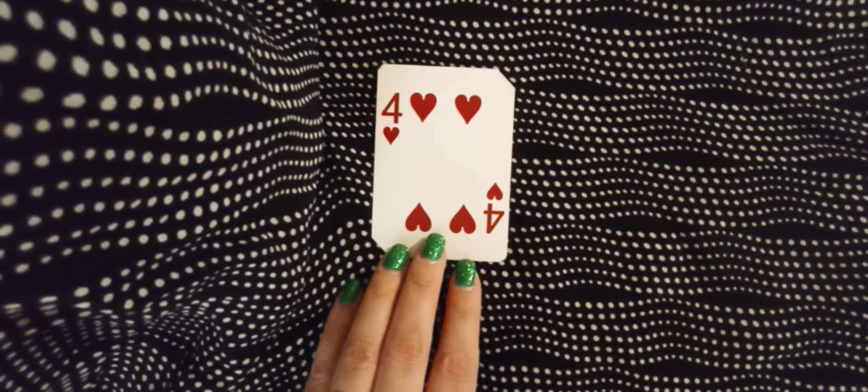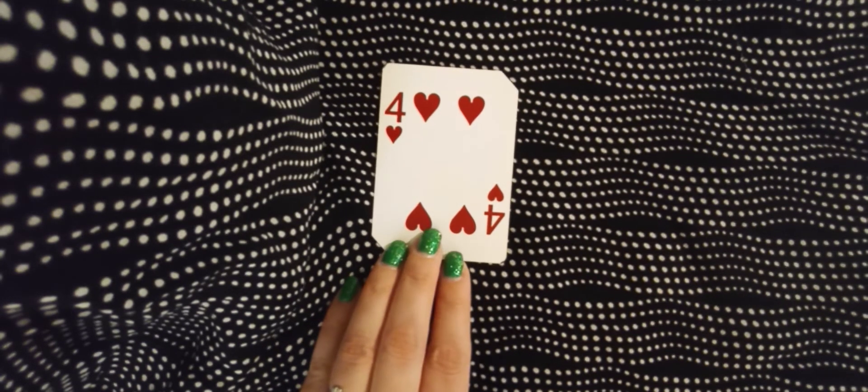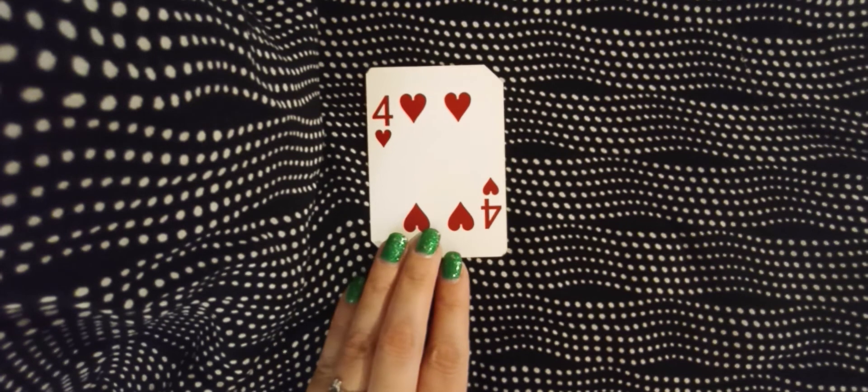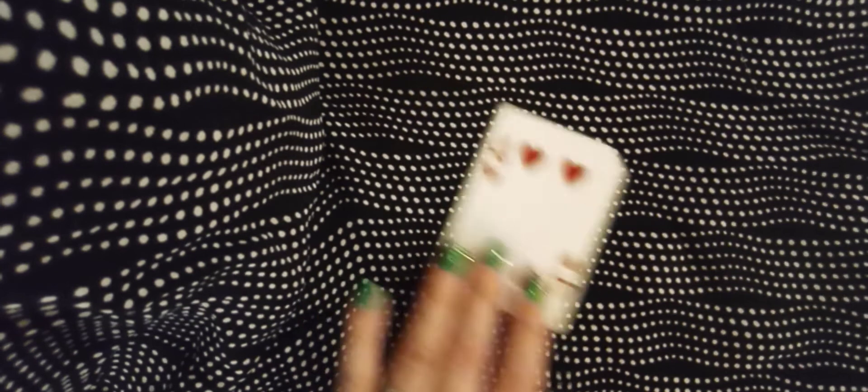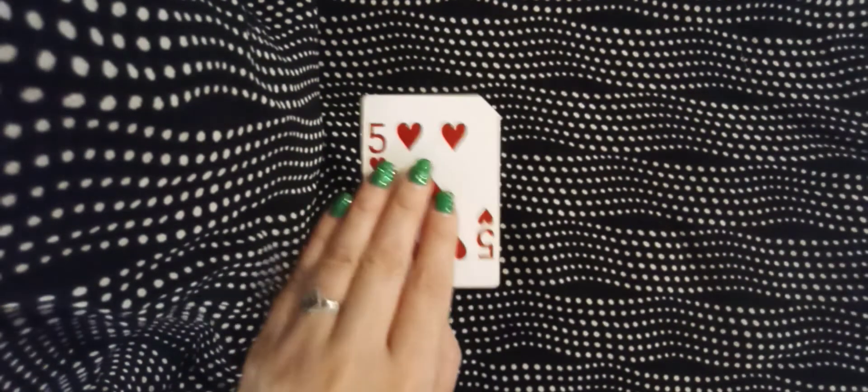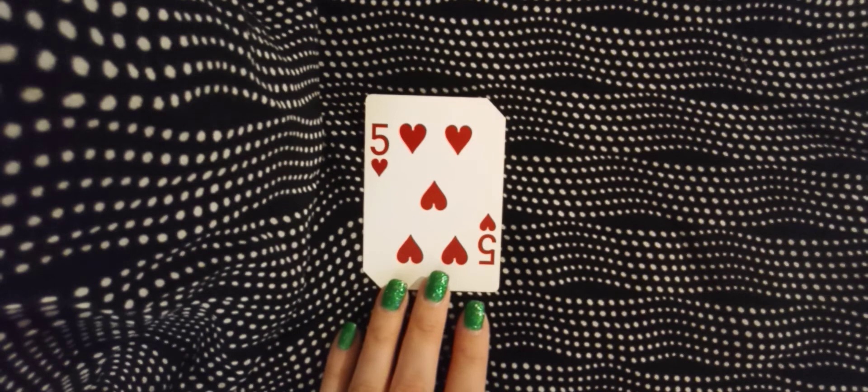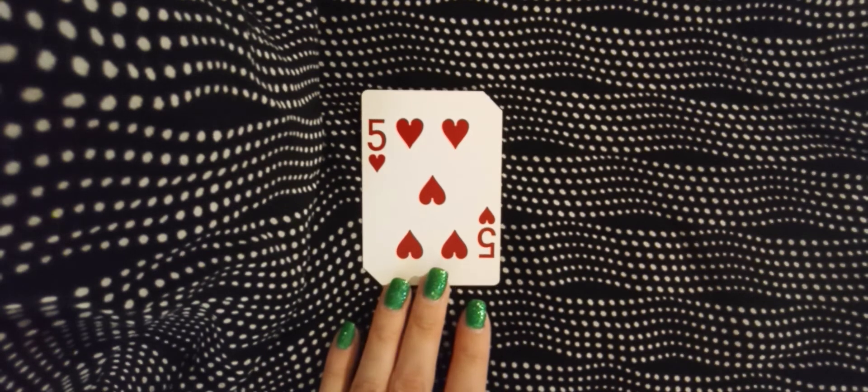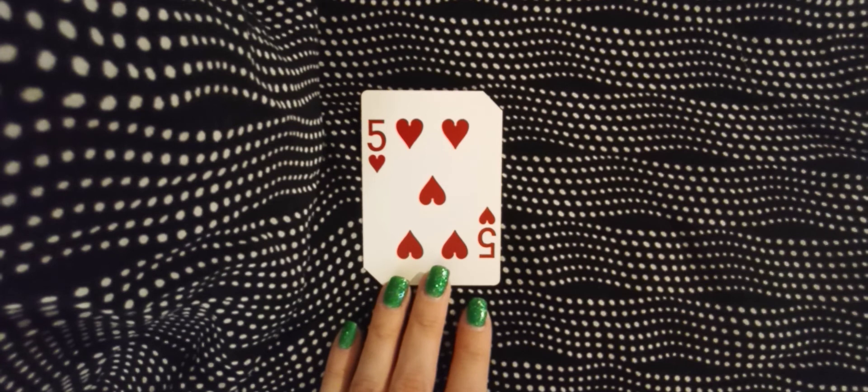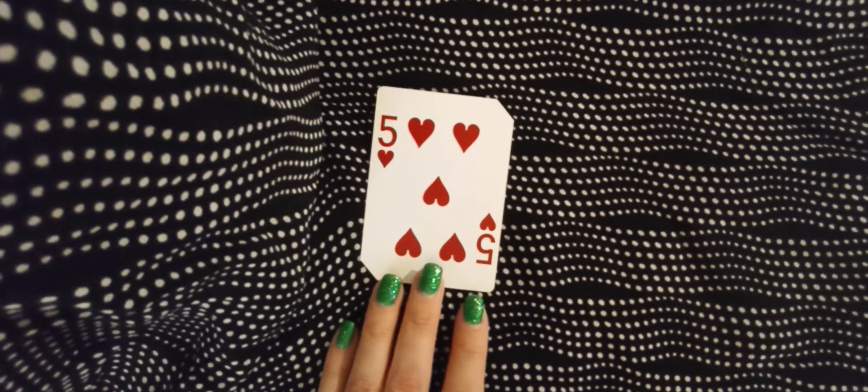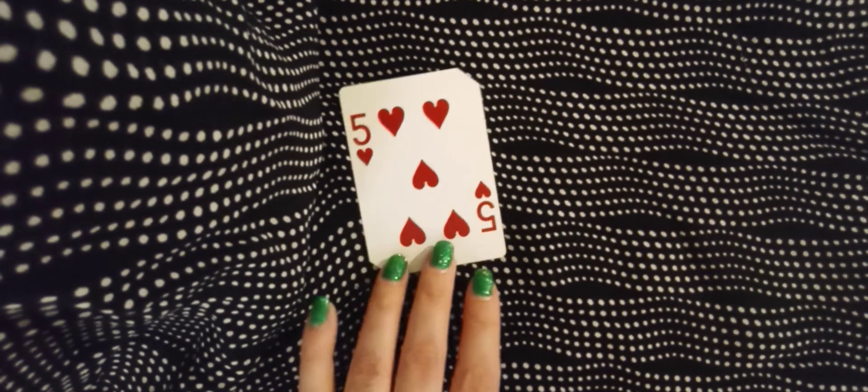This card represents stability and commitment in a relationship or marriage, and also security in a relationship. Five of Hearts means a change - it could be in family, romance, home, emotions. It could be good or bad, it just means change.